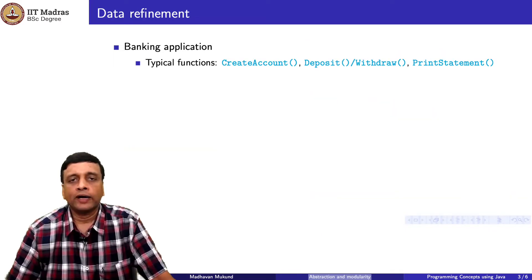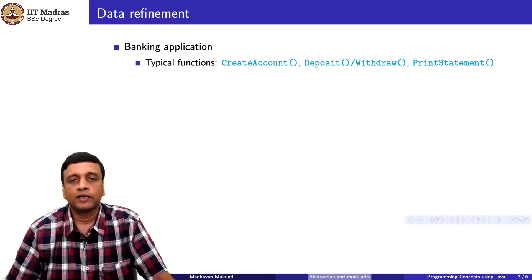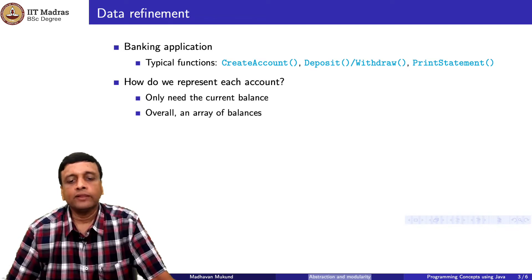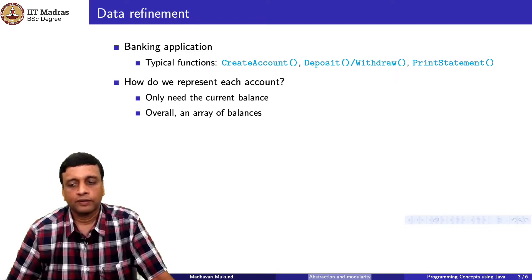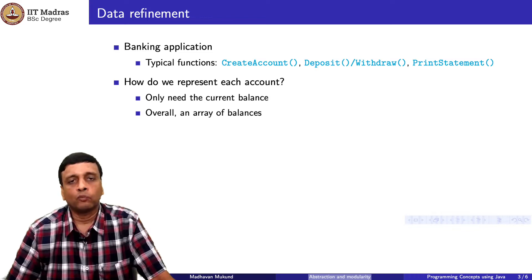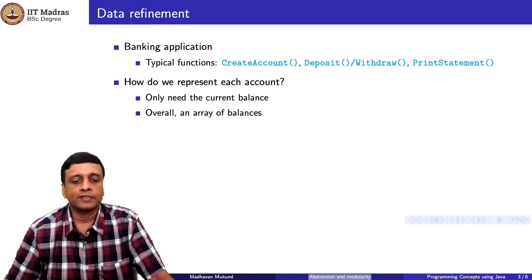Sometimes we may need what is called data refinement. Consider a banking application with functions like creating an account, depositing and withdrawing money, and printing an account statement. To begin with, the only thing we need to know about an account is how much money is there — the current balance. Deposit increments the balance, withdraw decrements it, transfer is like withdrawing from one account and adding to another. When printing a statement, we just print the current state. All the balances together can be represented as a simple array.